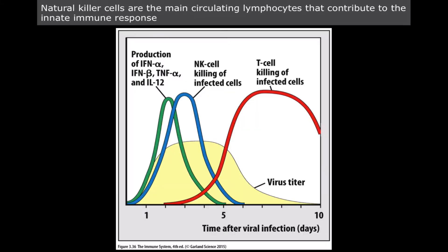We just got done talking about interferon alpha and beta, and also tumor necrosis factor alpha and interleukin-1, which are really the main antimicrobial proteins activated with viral infection. A couple of days afterwards, natural killer cells come in and start killing the infected cells. If they can't clear up the infection, we'll have activation of the T cells, and T cells kill everything.